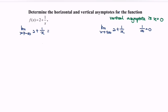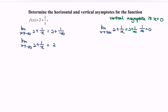Notice that we have 2 plus 1 over negative infinity. So the limit when x approaching negative infinity for 2 plus 1 over x approaches the value of 2. Similarly, for the limit when x approaching positive infinity, we have 2 plus 1 over infinity, and that limit also approaches 2.